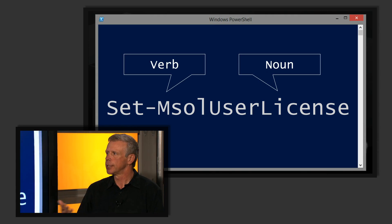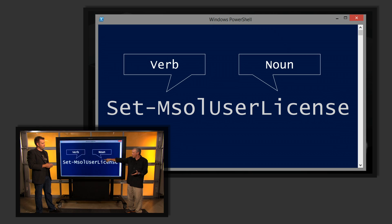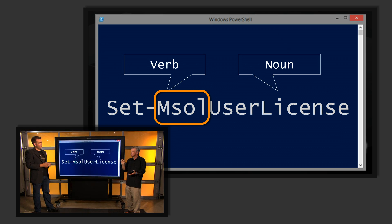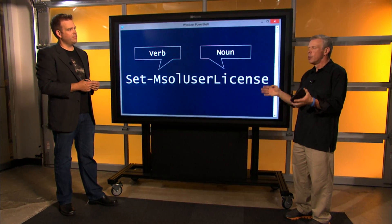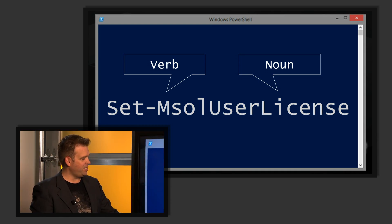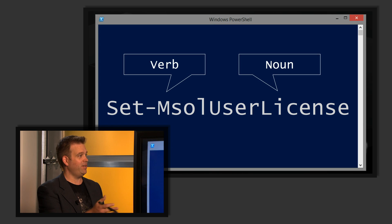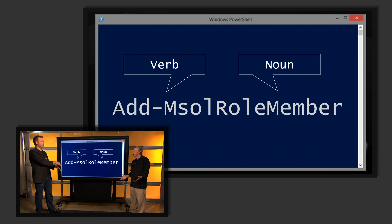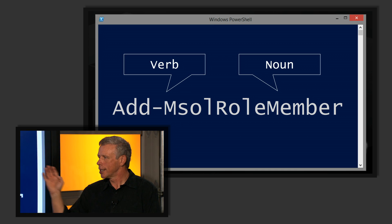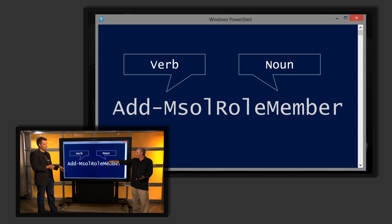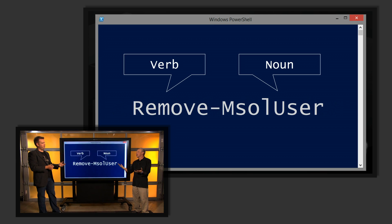Following the verb is the noun — what are you doing? In this case we're setting a user license. Another nice benefit: you see 'MSOL' in there. That's a modifier telling you what kind of user license — MSOL is short for Microsoft Online, or what we'd call Office 365. Knowing absolutely nothing about PowerShell, you can look at this and say, 'oh, this thing sets the user license for an Office 365 user.' These are all standard verbs, unlike the old command prompt. You can also see things like 'Add-MsolRoleMember' — adding a new role member to Office 365 — and the converse: removing a user.